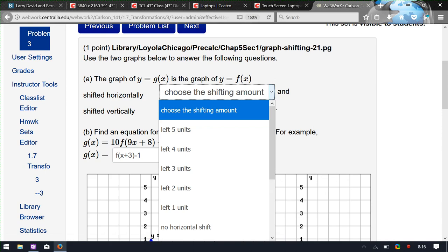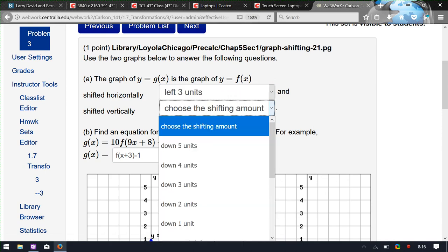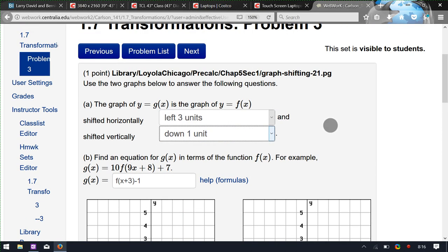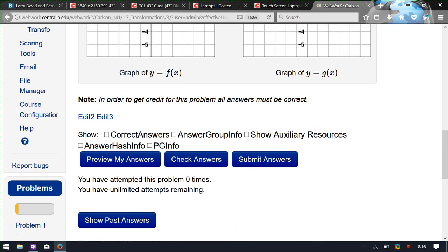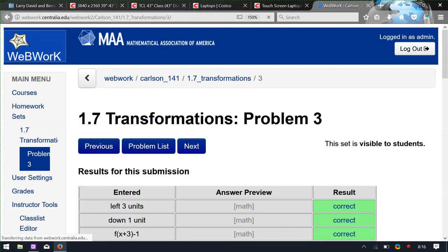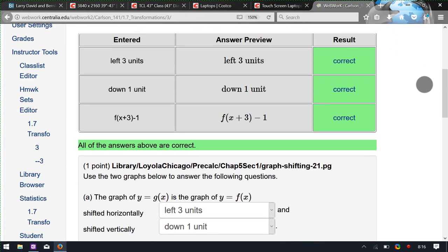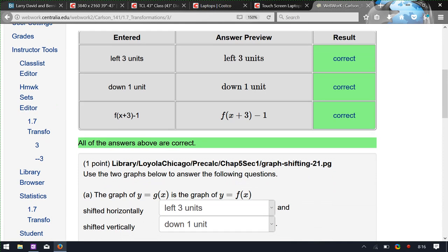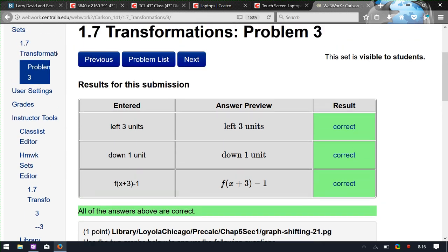Oh, better answer this. We said left 3, down 4, down 1. All right, any more homework questions? 1.5 problem 3. 1, 5, 3.